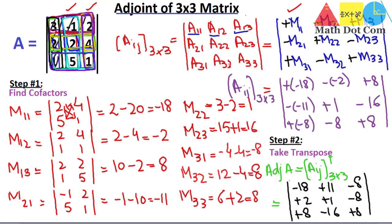This is the adjoint of the 3×3 matrix. That's all from today's lecture — stay tuned for the next lecture in which we will see how to find the inverse of a 3×3 matrix using the concept of the adjoint. Thank you.